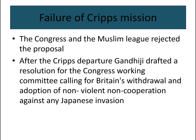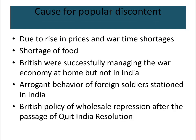After the Cripps departure, Gandhiji drafted a resolution for the Congress Working Committee calling for Britain's withdrawal and the adoption of nonviolent non-cooperation against any Japanese invasion. The causes for popular discontent included a rise in prices, wartime shortages, and shortage of food. The British were successfully managing the war economy at home but not in India.